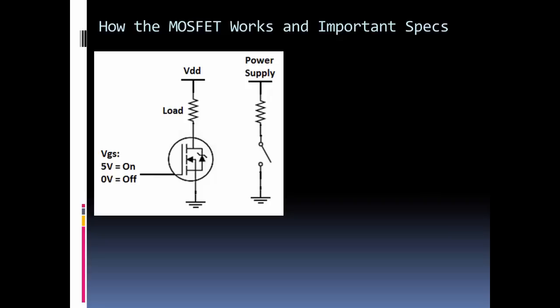With an N-channel MOSFET, we typically want to have the source connected to ground. The drain is going to be connected to the load, and the load is then connected to our power source.